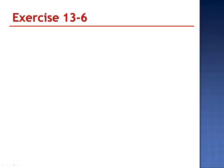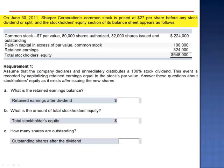Exercise 6. On June 30, 2011, Sharper Corporation's common stock is priced at $27 per share before any stock dividend or split. In the stockholder's equity section of its balance sheet appears as follows.